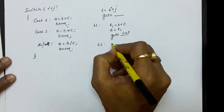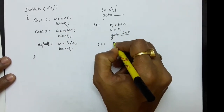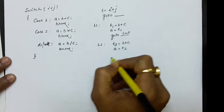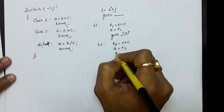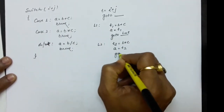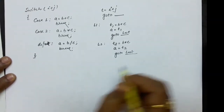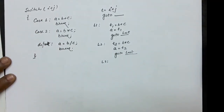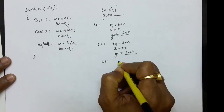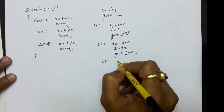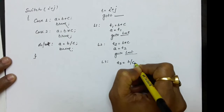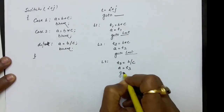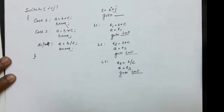For case 2, A = B * C is written in three-address code as: T2 = B * C, then A = T2. After executing these statements, we go to last using break. For the default case, A = B / C is written as: T3 = B / C, then A = T3, and then go to last. This is an unconditional jump.